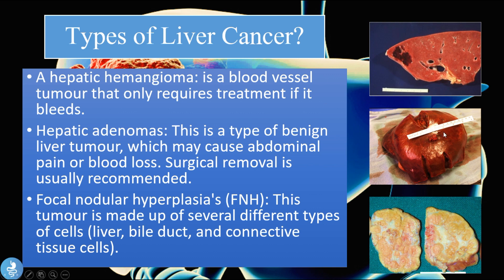We then have the focal nodular hyperplasias, or FNHs. This tumor is made up of several different types of cells, including liver cells, bile duct cells, and connective tissue cells. As you can see, it is spread across the entire portion of the liver.